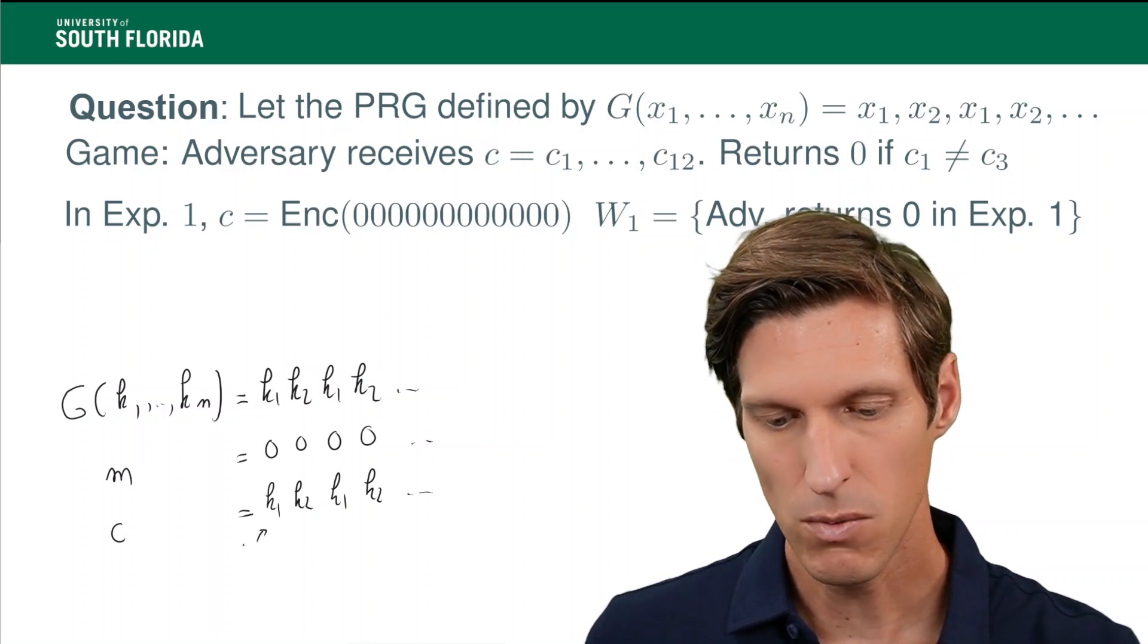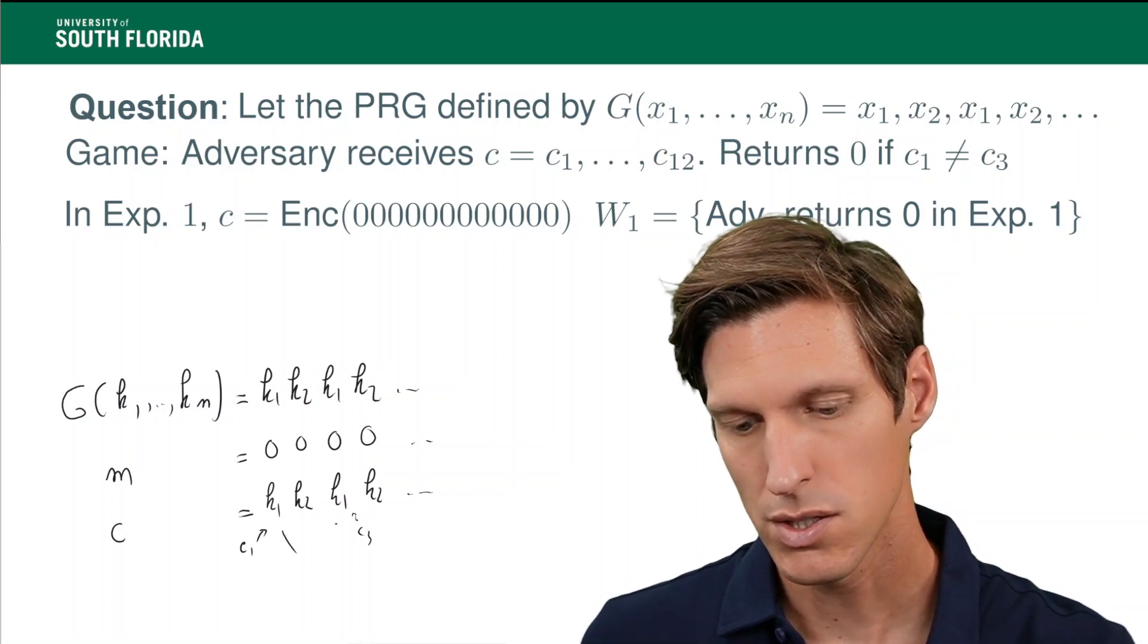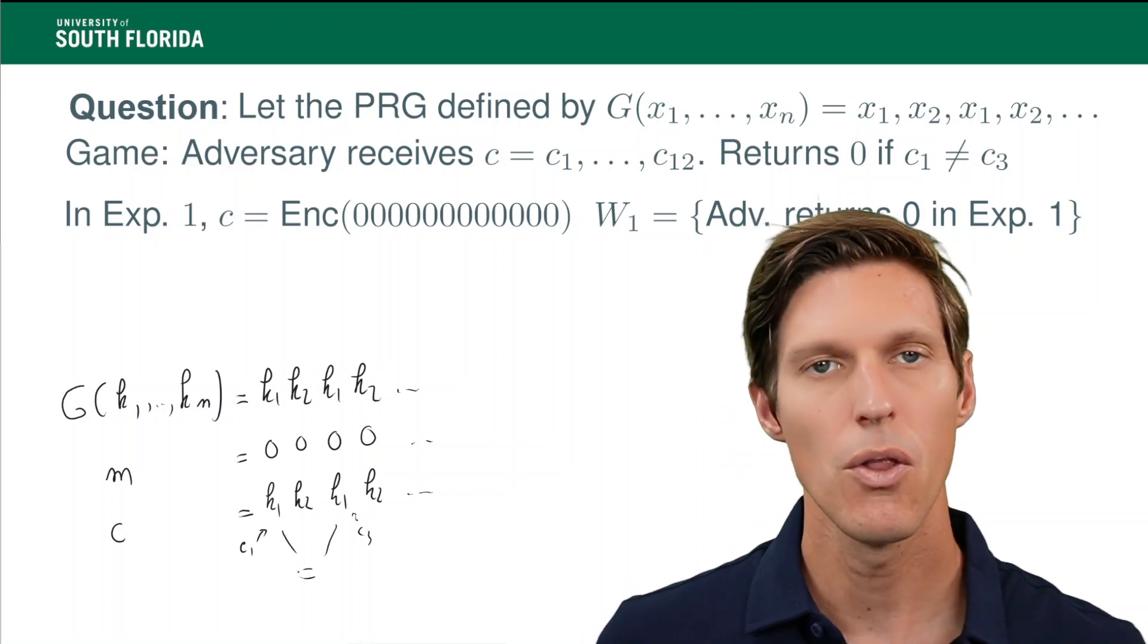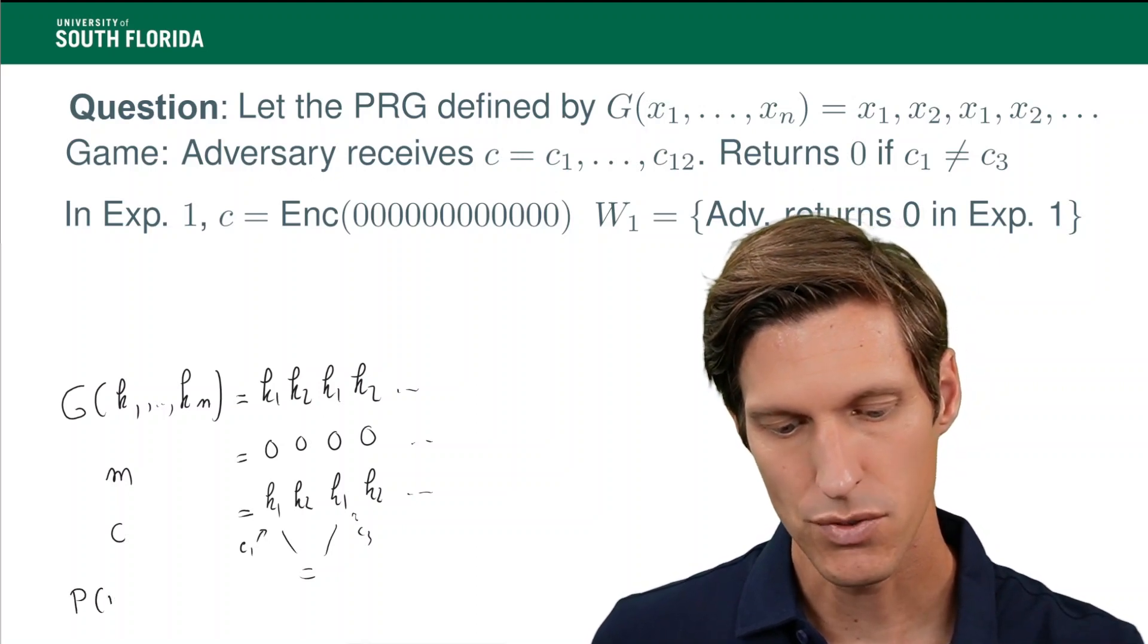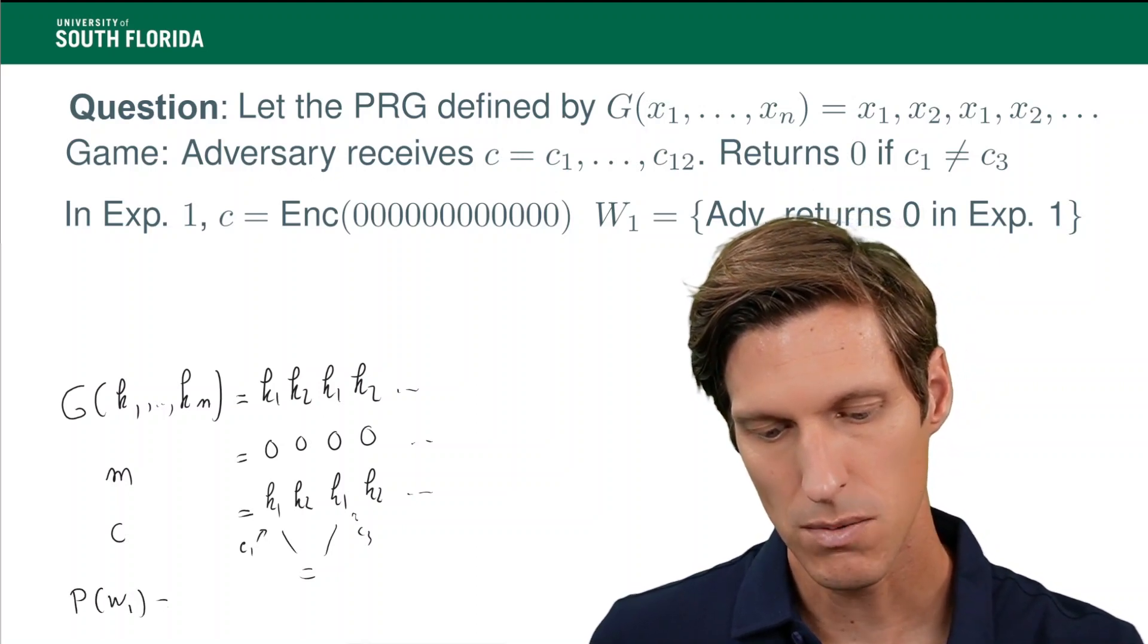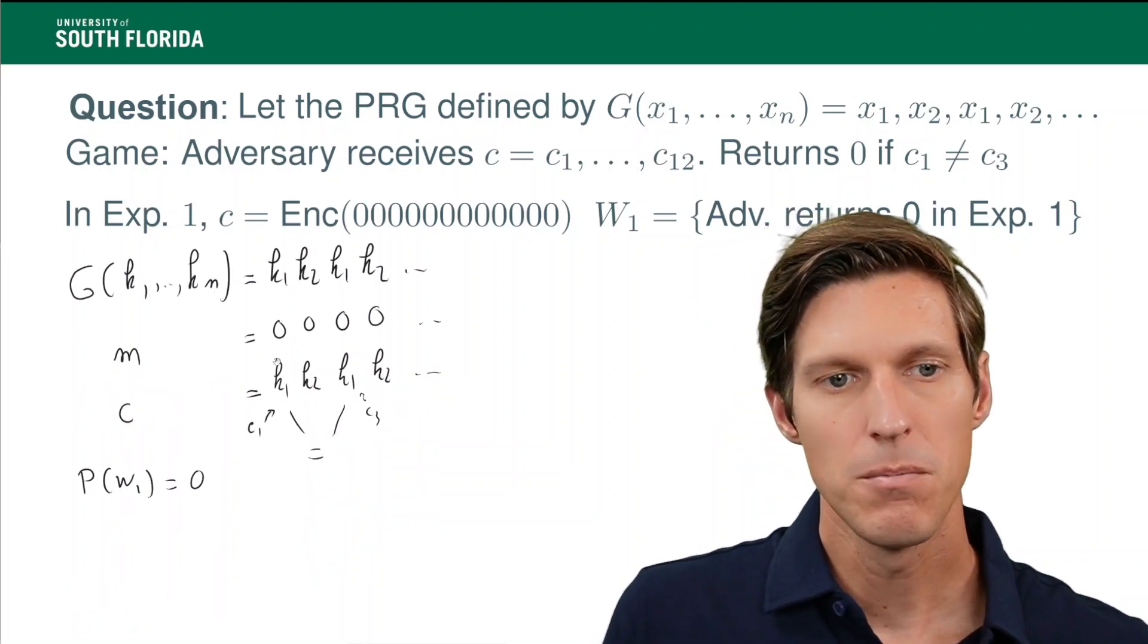Now my c1 here is k1, and my c3 is also k1. So they are all the time equal. So the probability that my adversary returns 0 is 0. It never happens.